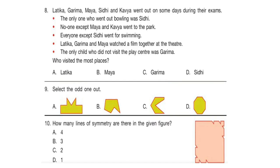Question 8. Latika, Garima, Maya, Siddhi, and Kavya went out on some days during their exams. The only one who went out bowling was Siddhi. No one except Maya and Kavya went to the park. Everyone except Siddhi went for swimming. Latika, Garima, and Maya watched a film together at the theatre. The only child who did not visit the play centre was Garima. Who visited the most places? Think about the answer and write it down on paper.